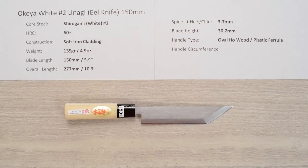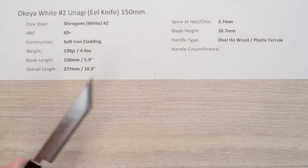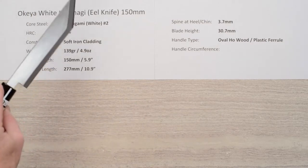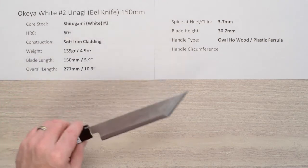Steve Gamache with another Chef Knives to Go Quick Look product review. This time I'm going to try my best at pronunciation. This is the Okeya Shirogami or White Paper No. 2 Unagi Eel Knife, 150mm length.